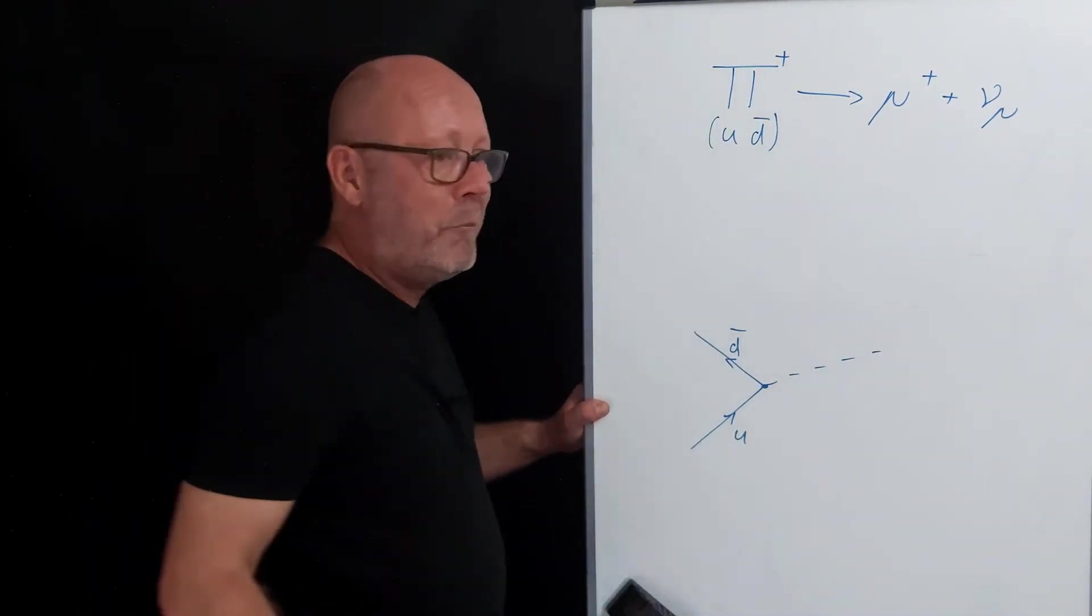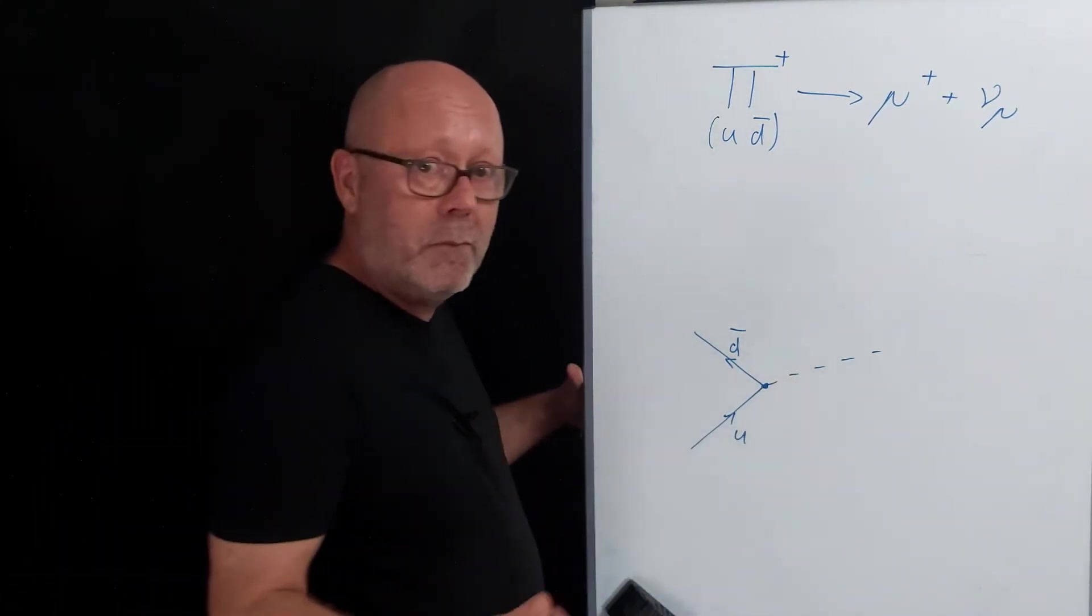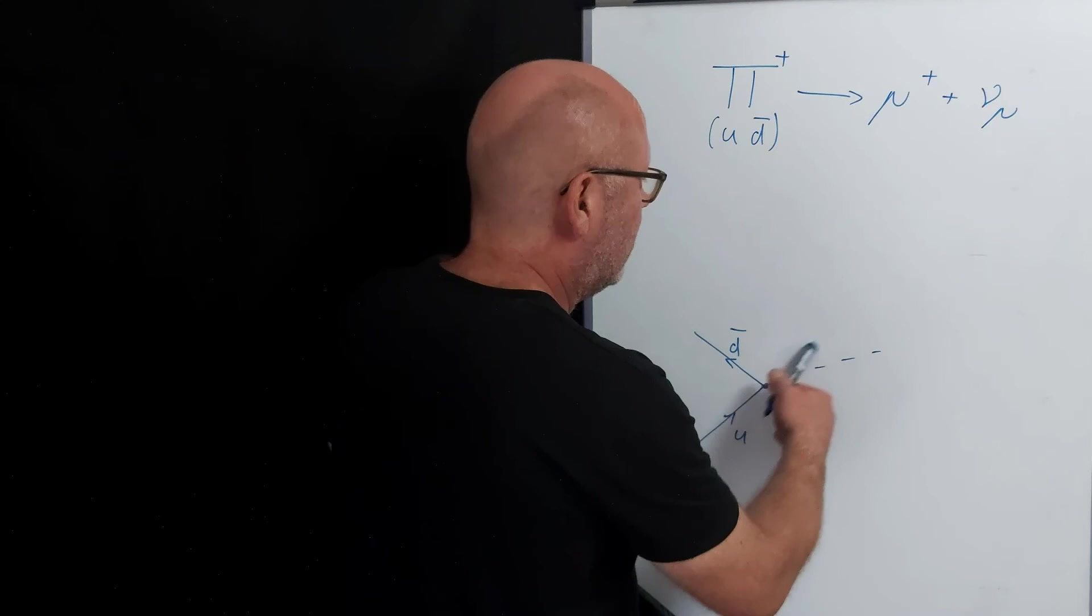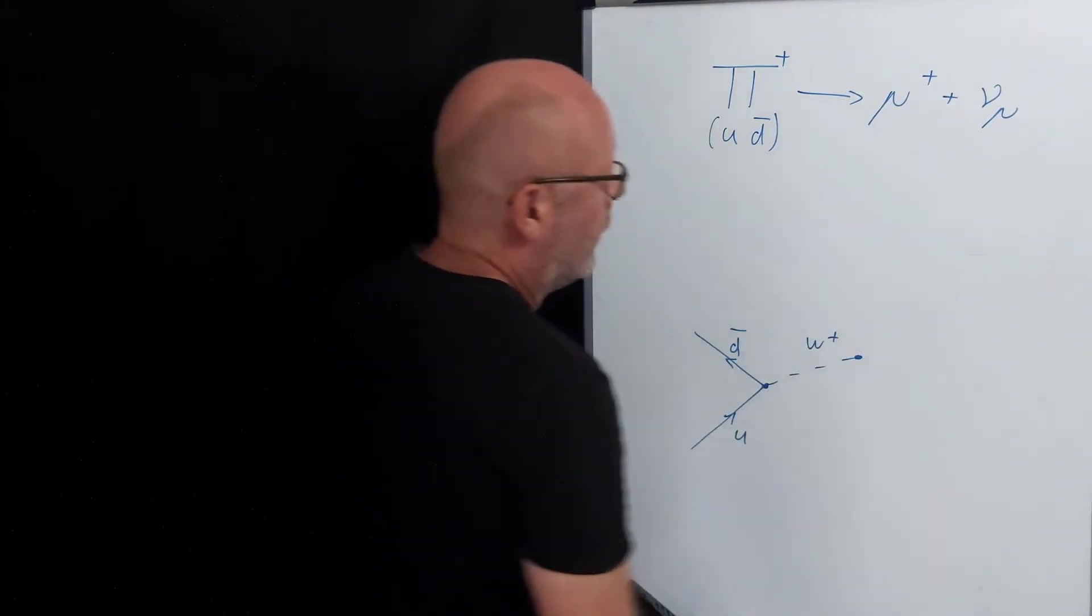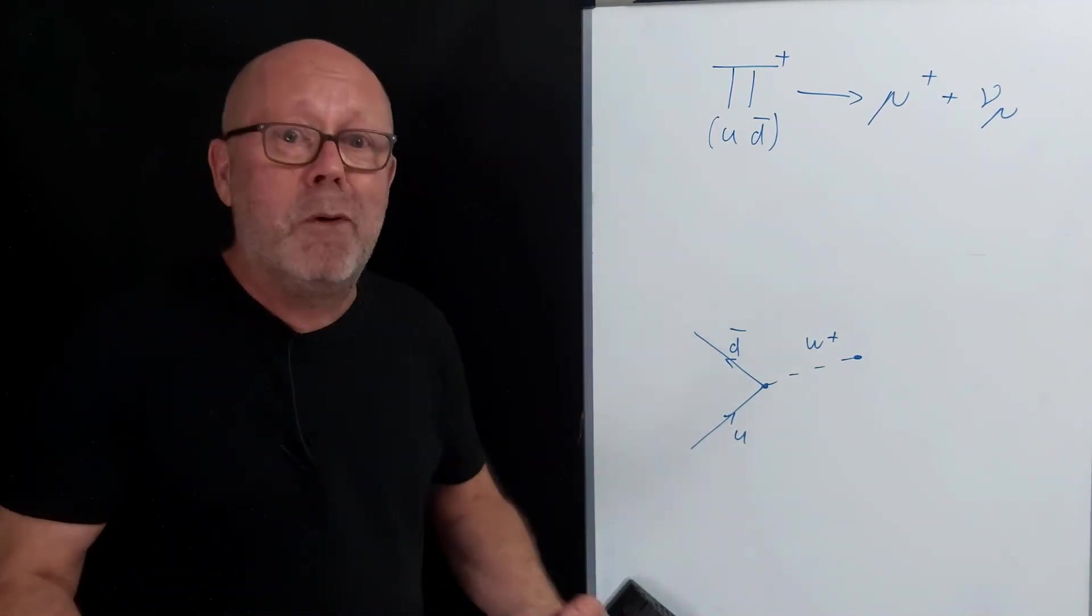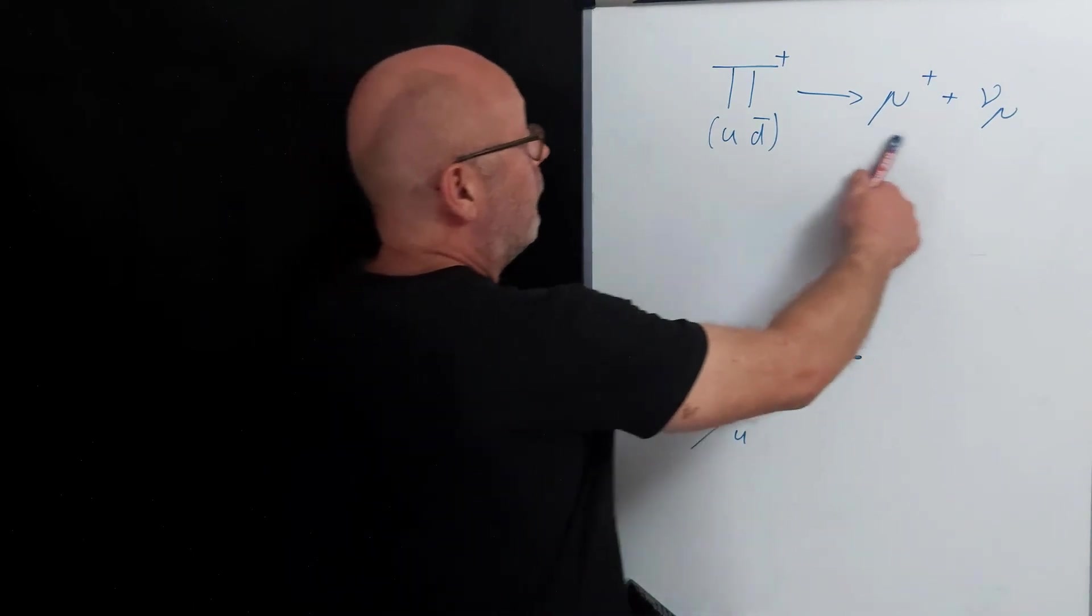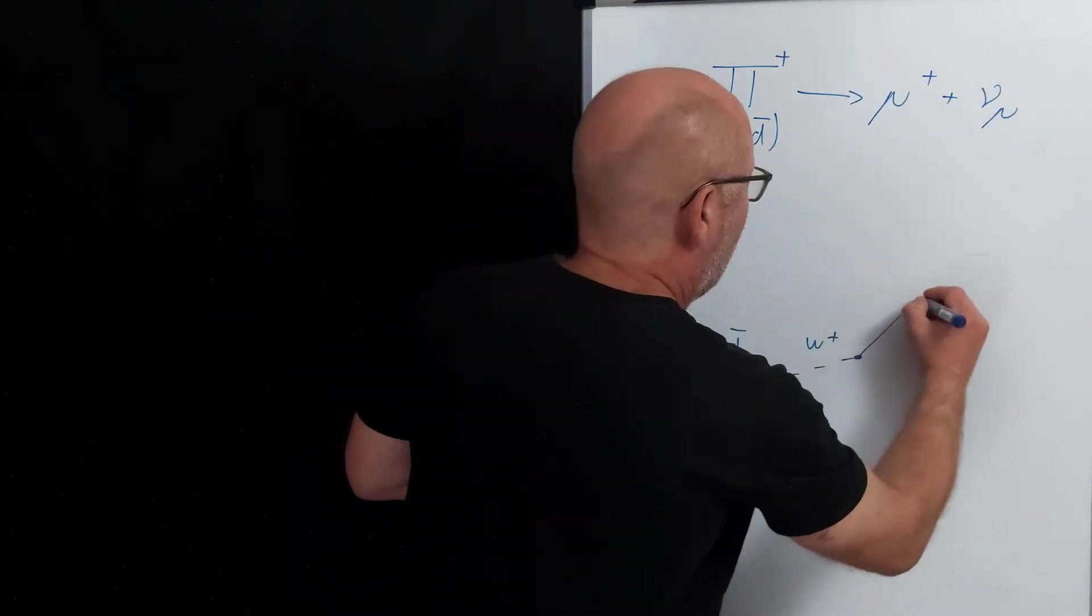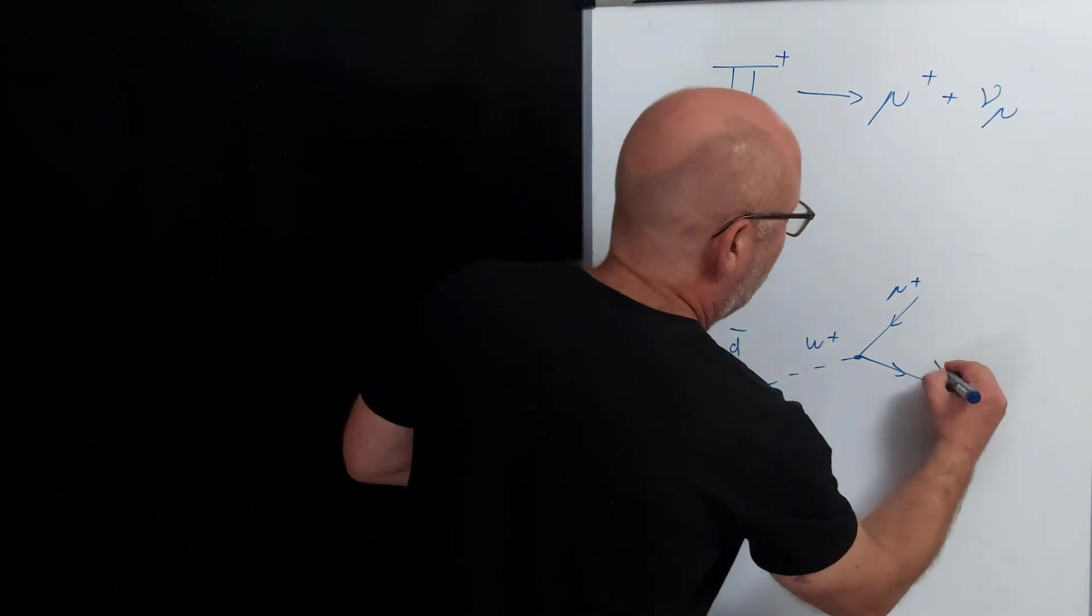But the pion has a positive charge. So in order to conserve the charge number, we need to have a positive charge here, so it will be the W+. And the W+, a heavy boson, will decay quickly into what you have there, therefore an anti-muon and the neutrino of the muon.